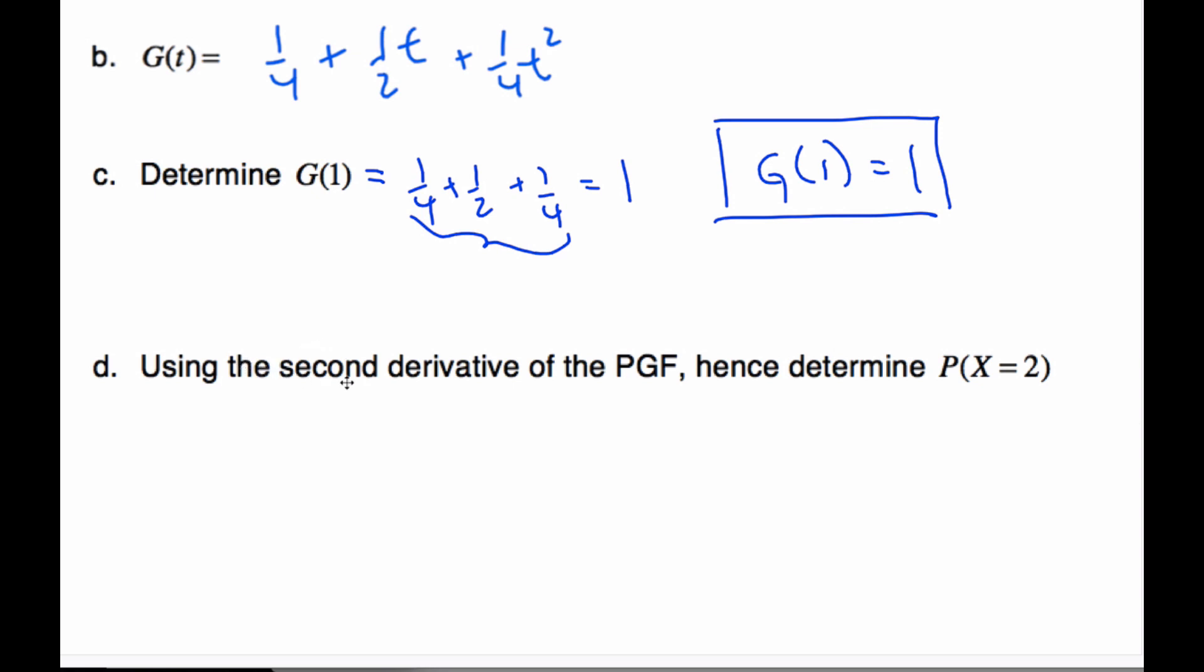Now, it says find the second derivative, which is kind of interesting, because now I am doing probability and I'm taking derivatives. So I'm going to take the second derivative of this. So g prime at t, that goes away, ends up being one half plus one over two t, g double prime at t equal to simply one half.